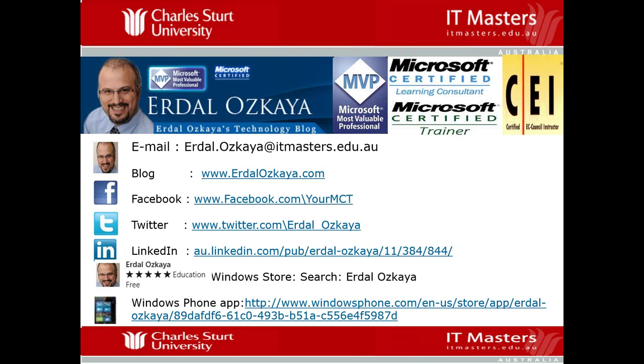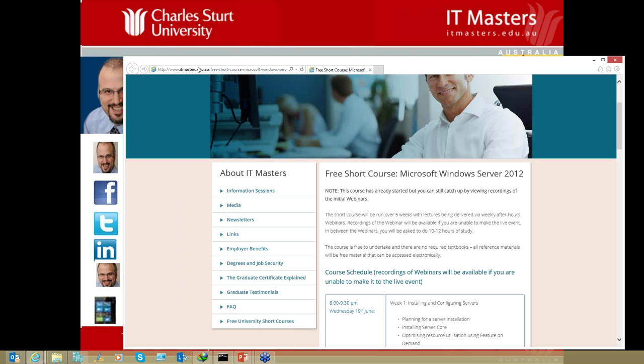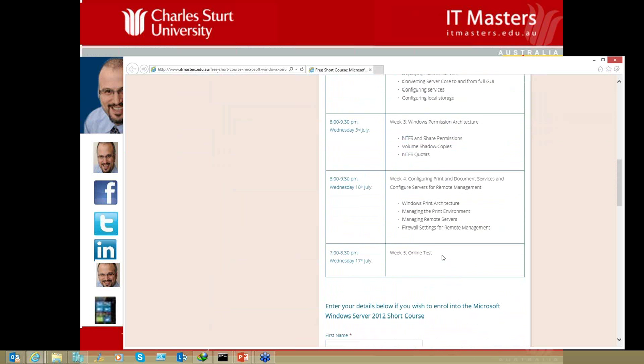On week 2, I showed you how to deploy roles on servers, how to convert Server Core from the graphical user interface, how to configure services, and how to configure local storage. Last week we covered what NTFS is, what NTFS permissions are, what volume shadow copies are, and what NTFS quotas are. This week I showed you the printing architecture and remote desktop services. All this is available on our website at itmasters.edu.au under free short courses.